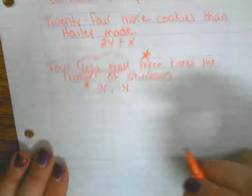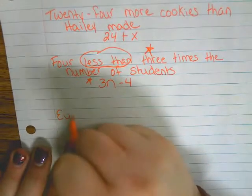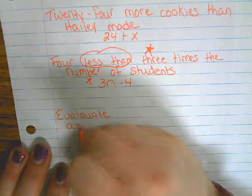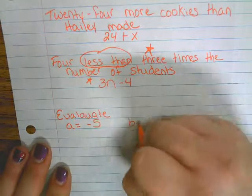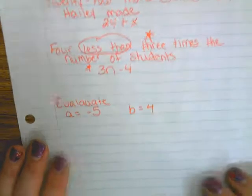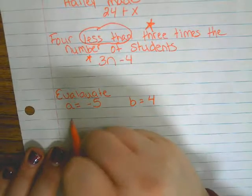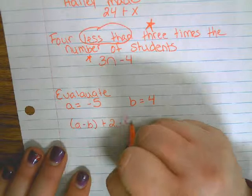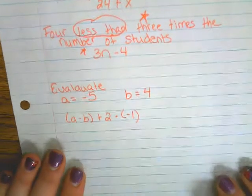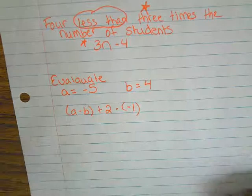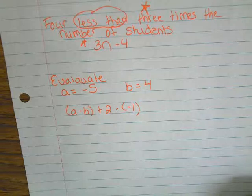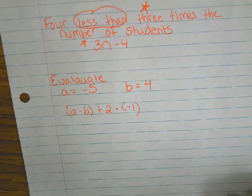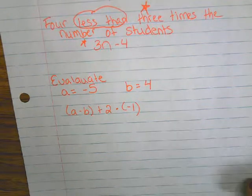Next section is going to tell you to evaluate. So let's say a is equal to negative five, b is equal to four. And I want to know a minus b plus two times negative one. We've done some like that, but we won't be working on those today.